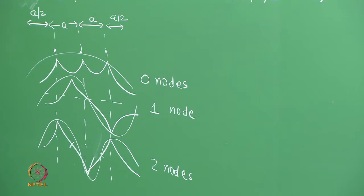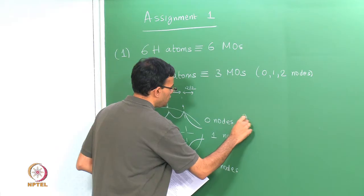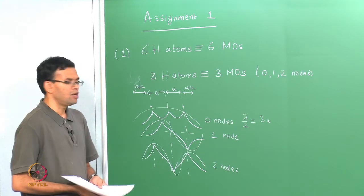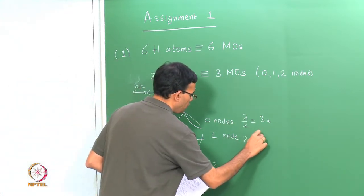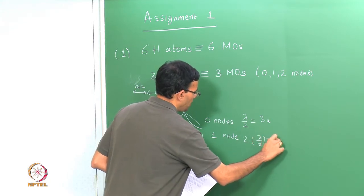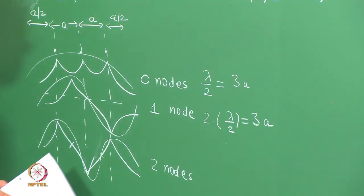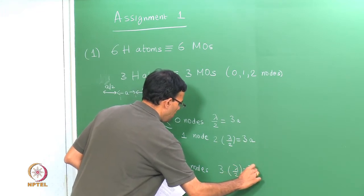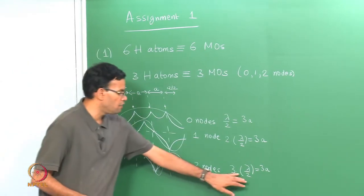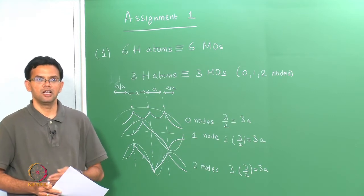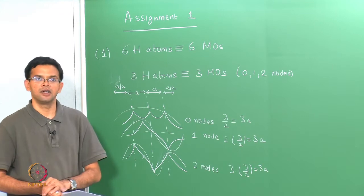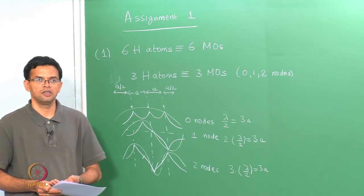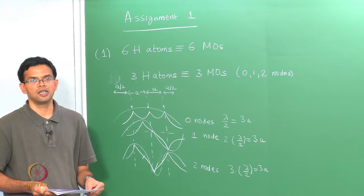If lambda is the wavelength, then for 0 nodes you have lambda/2 = 3a, for 1 node you have 2 × lambda/2 = 3a, and for 2 nodes you have 3 × lambda/2 = 3a. By knowing this value of lambda/2, which defines the position of the node, you can construct the molecular orbitals. This is the case of 3 hydrogen atoms, and we can extend the same concept to 6 hydrogen atoms.